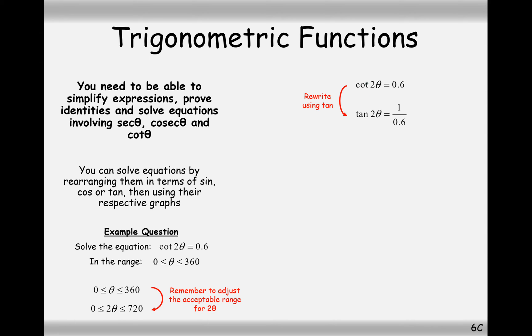In this case here, let's rearrange this. So, we get tan 2 theta equals 1 over 0.6. 1 over 0.6 is, when we do tan minus 1 of it, gives us 59.04. So, this is our value for 2 theta, or if you've substituted a different letter in, it's equal to that letter. But now, let's find the other values of 2 theta in between 0 to 720.